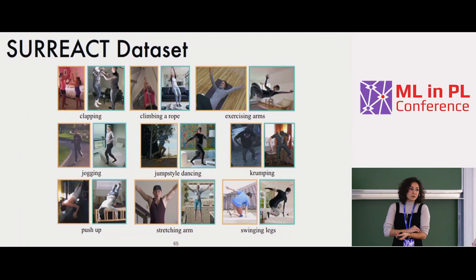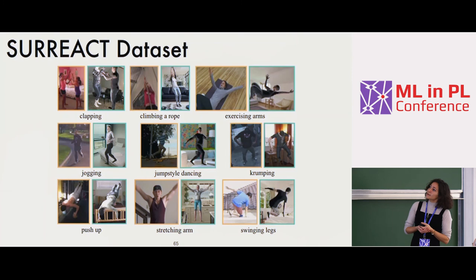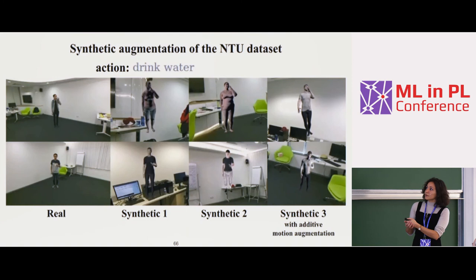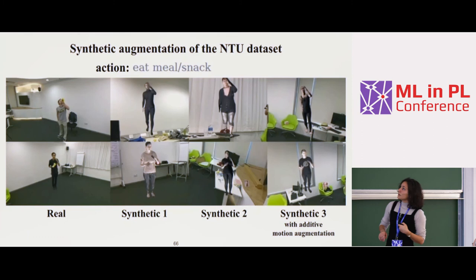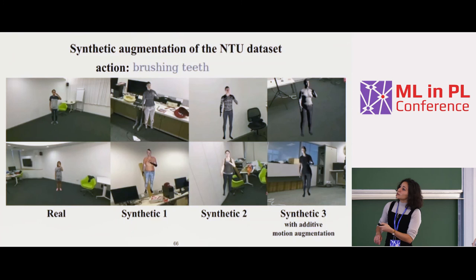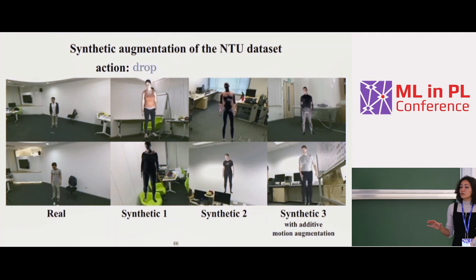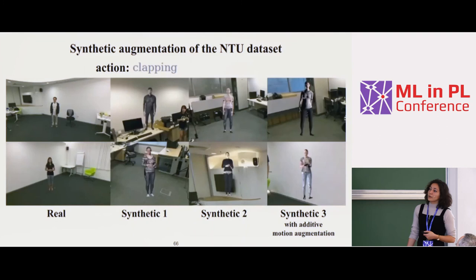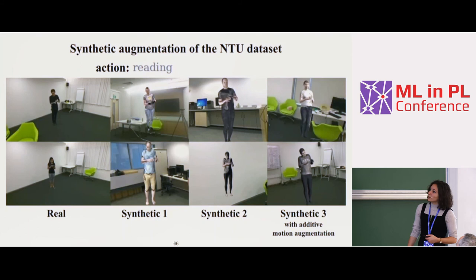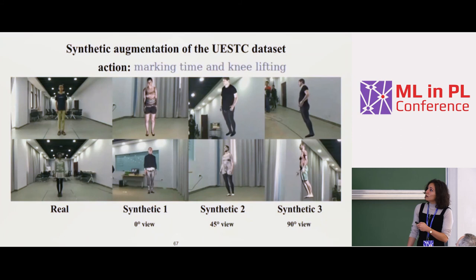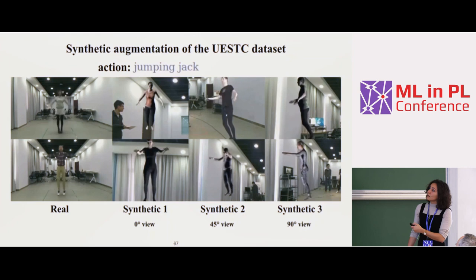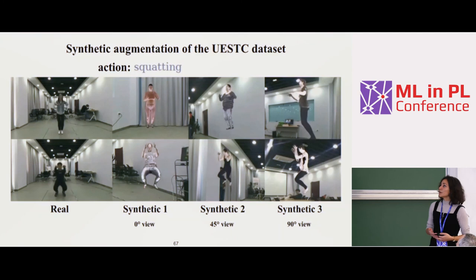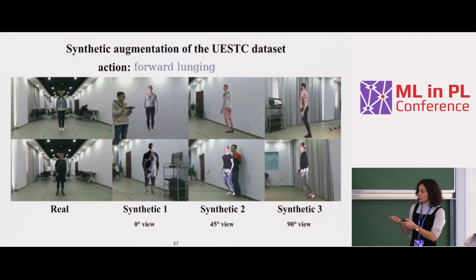We study cross-view training: training with one viewpoint and testing with another. The NTU dataset is captured in a specific room, and we can extract 3D pretty well and augment it in many different ways, though it is a bit jittery. Similarly for the UESTC dataset, we can transfer fine-grained action classes synthetically at different viewpoints: 0, 45, and 90 degrees. We also look at Kinetics — a very large-scale unconstrained YouTube dataset — using a small subset for one-shot learning, where you have only one training sample per category.